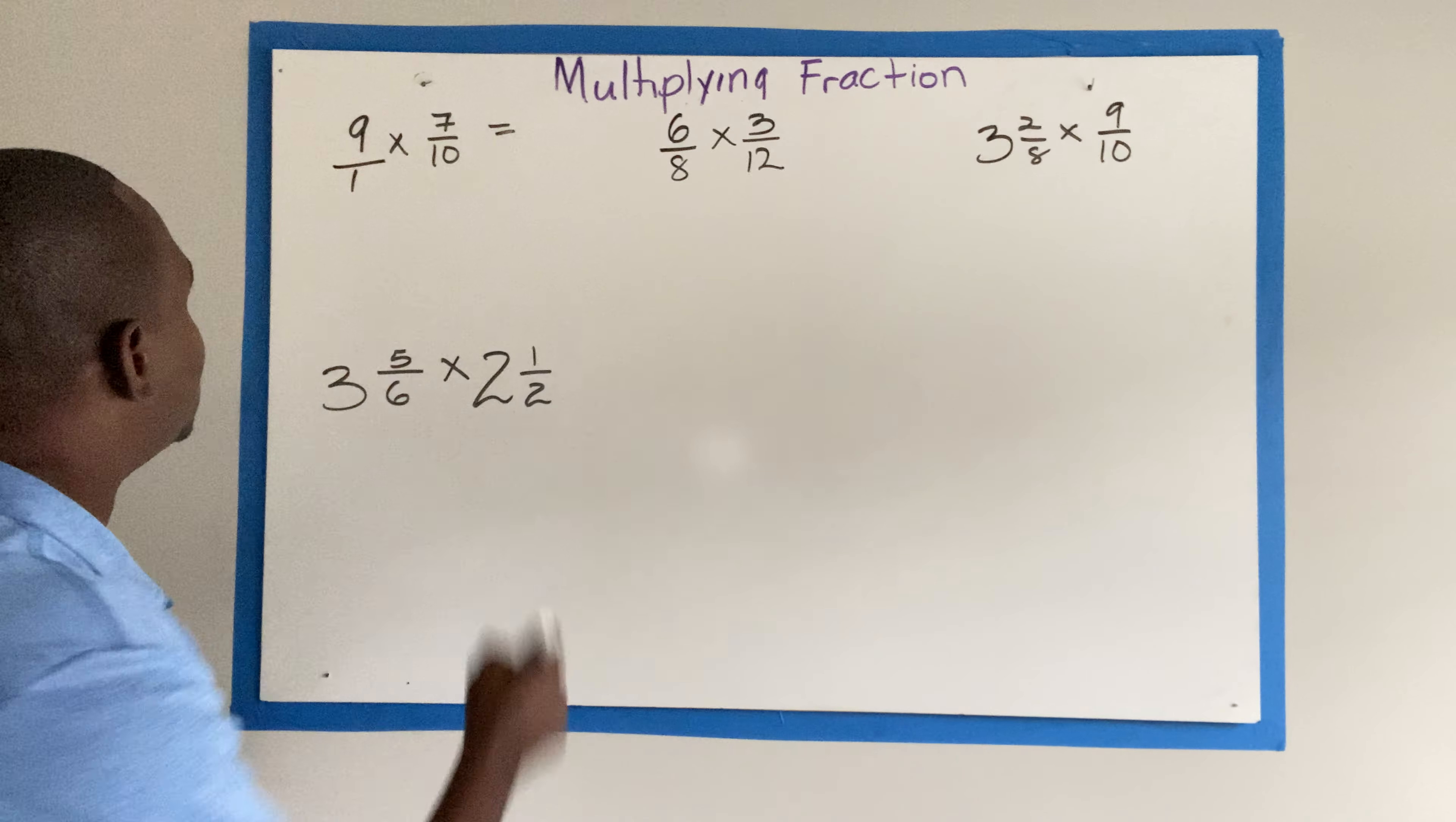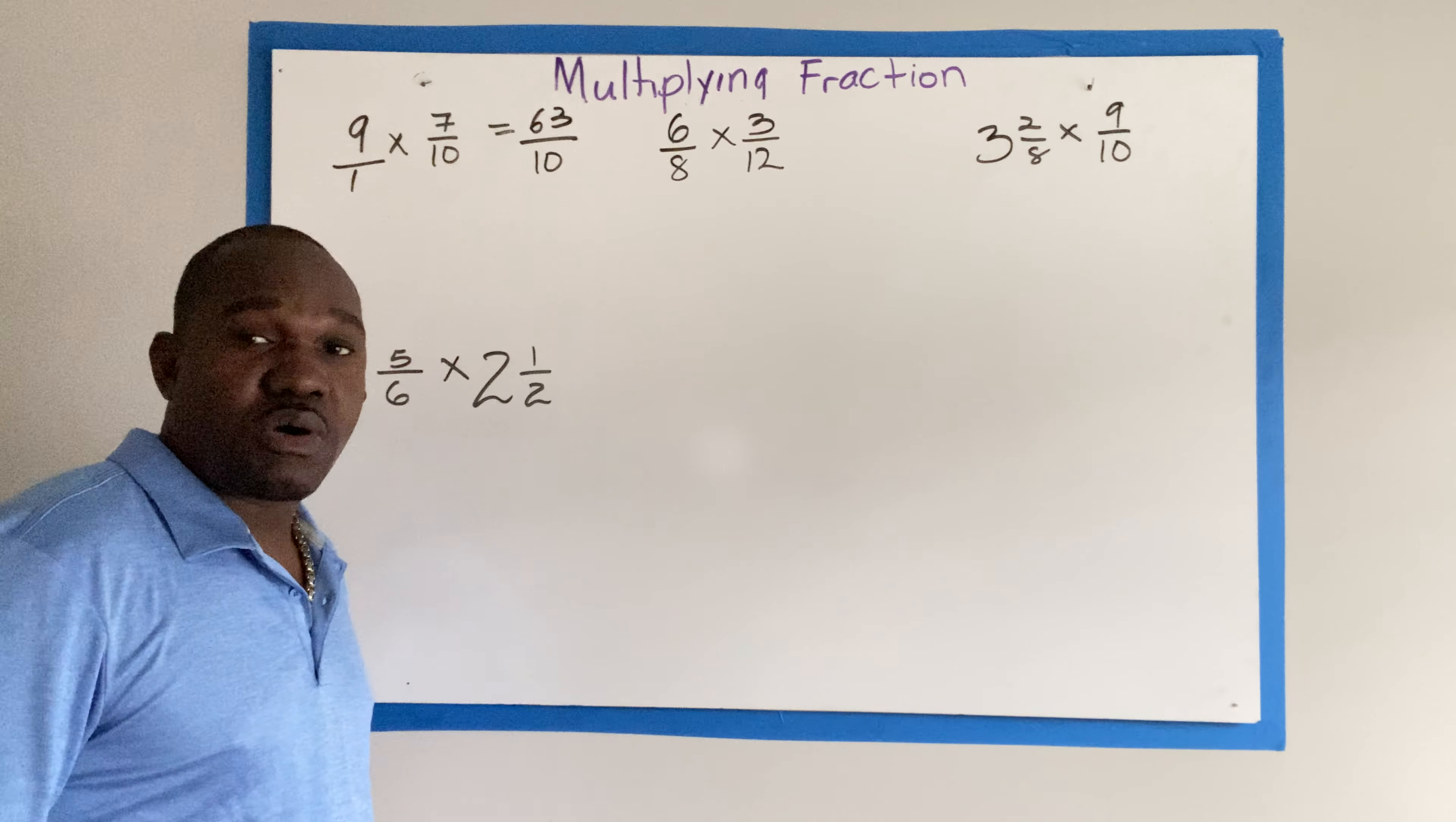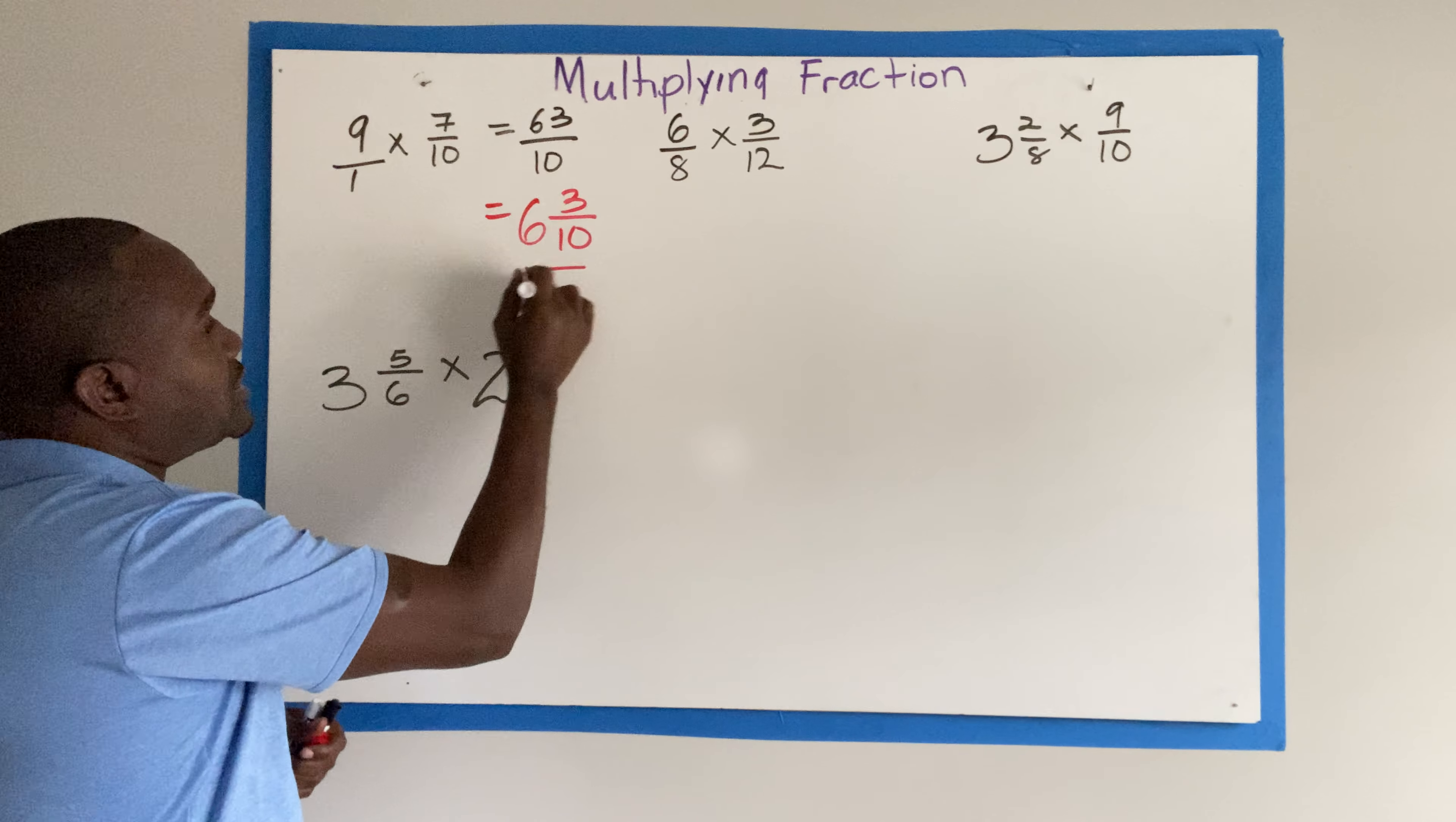So we multiply across. 9 times 7 will give us 63, 1 times 10 will give us 10. Now 63 over 10 is an improper fraction, so we need to write that improper fraction as a mixed fraction or a mixed number. And always write your fraction in its lowest term. So we have 10 into 63 goes 6 times, 3 over 10. And that's our final answer.